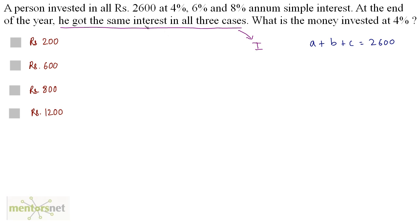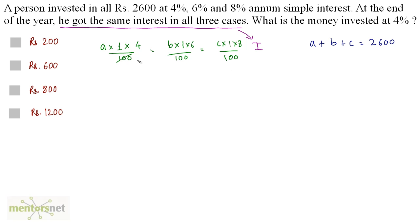Since the interest is the same in all cases, interest at 4% equals interest at 6% equals interest at 8%. Using the formula PNR upon 100: A times 1 times 4 upon 100 equals B times 1 times 6 upon 100 equals C times 1 times 8 upon 100. Cancelling the hundreds: 4A equals 6B equals 8C.